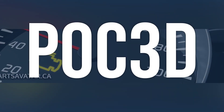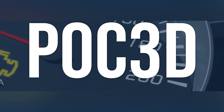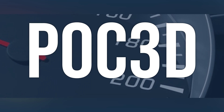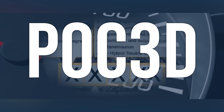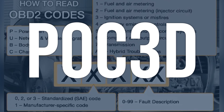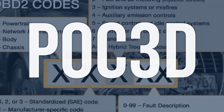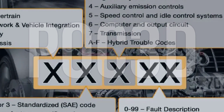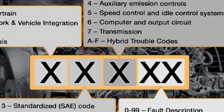The OBD2 fault code P0C3D means there is a problem with the DC-DC converter temperature sensor B circuit. This sensor is responsible for regulating the operating temperature of the inverter-converter assembly to prevent overheating.